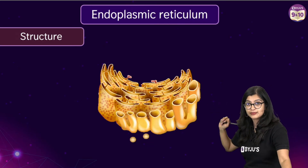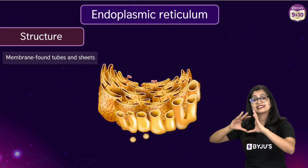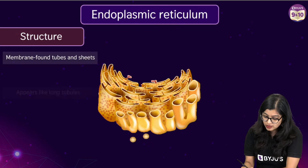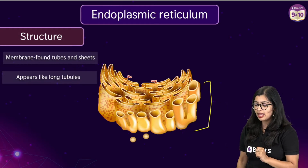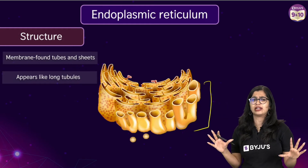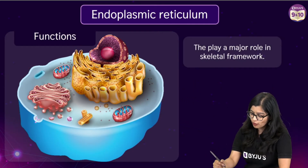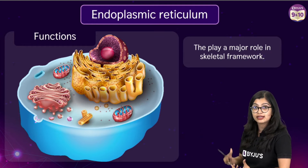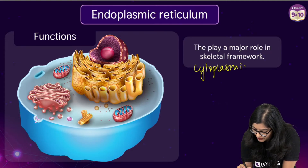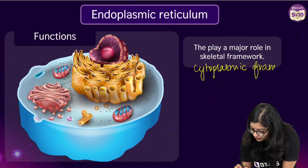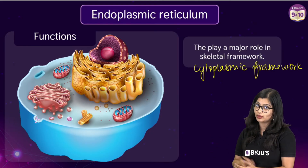If you were to look at the structure of the endoplasmic reticulum, we see that they are made up of a large network of membrane-bound tubules or sheet-like structures. In some cases we also see that they look like long tubules — oblong or long tubules or bags. The endoplasmic reticulum functions as a skeletal framework for the cell, or what we call as the cytoplasmic framework. It provides a cytoplasmic framework for the cell and its surface allows for certain biochemical activities to take place.